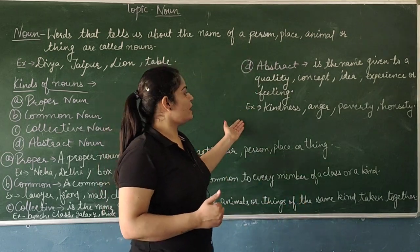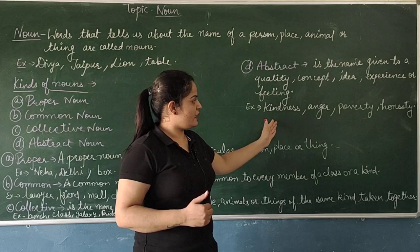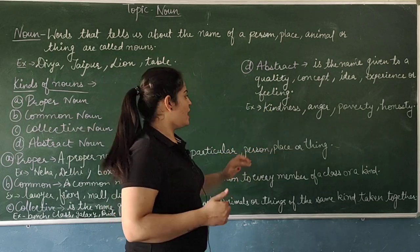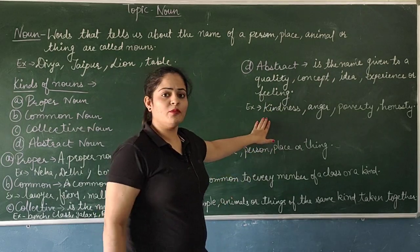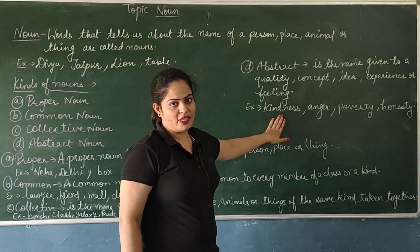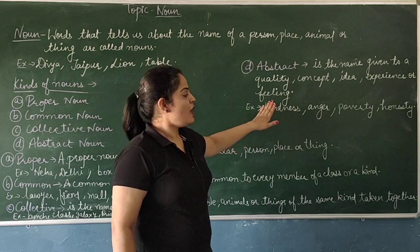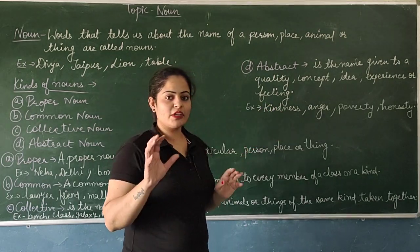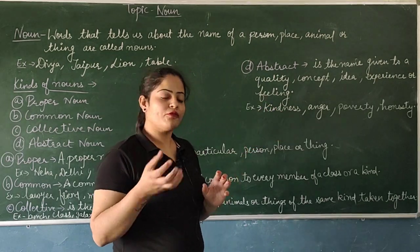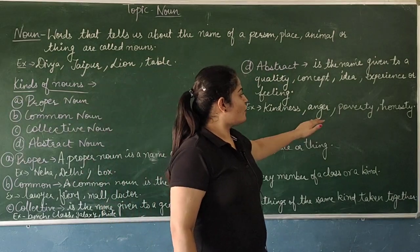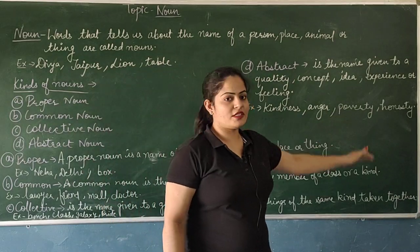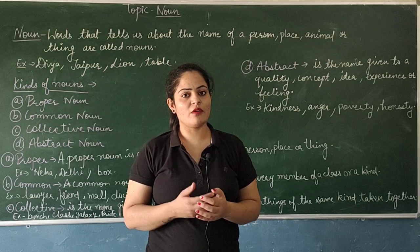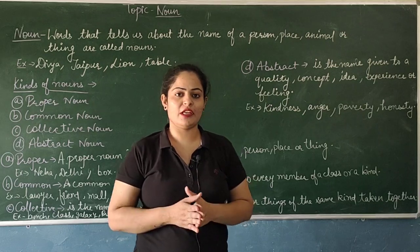For example: kindness, anger, poverty, honesty. For instance, 'Harsh is a kind person' — we can feel the kindness. 'Honesty is the best policy' — we can feel it. These are all abstract nouns.